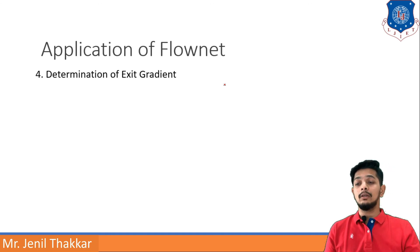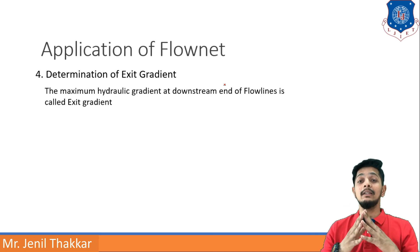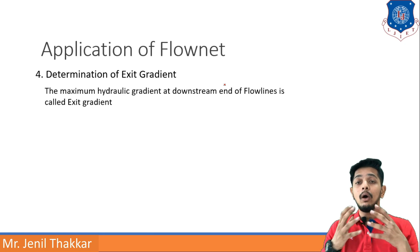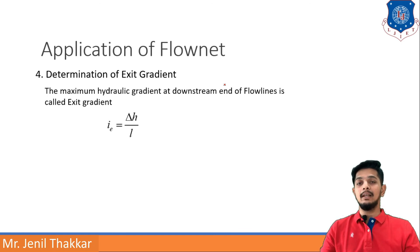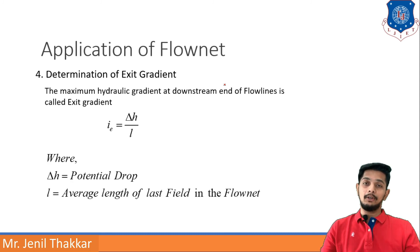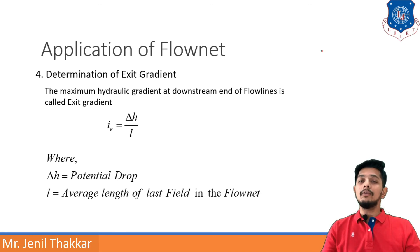The fourth application is determination of exit gradient. The maximum hydraulic gradient at the downstream end of flow lines is called the exit gradient. IE (exit gradient) = ΔH/L, where ΔH is the potential drop and L is the average length of the last field in the flow net. By comparing exit gradient with critical gradient, we can assess whether failure is imminent.